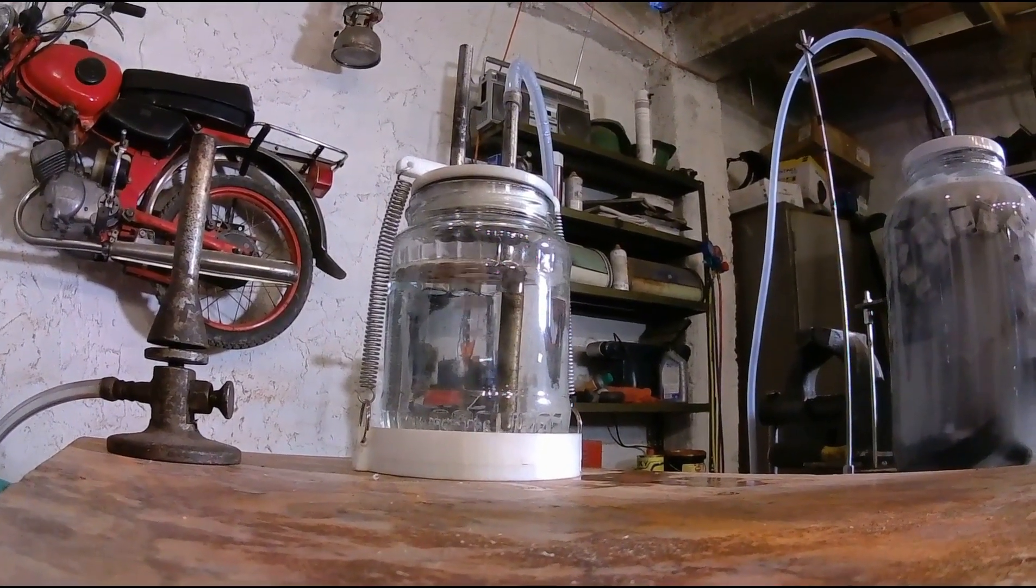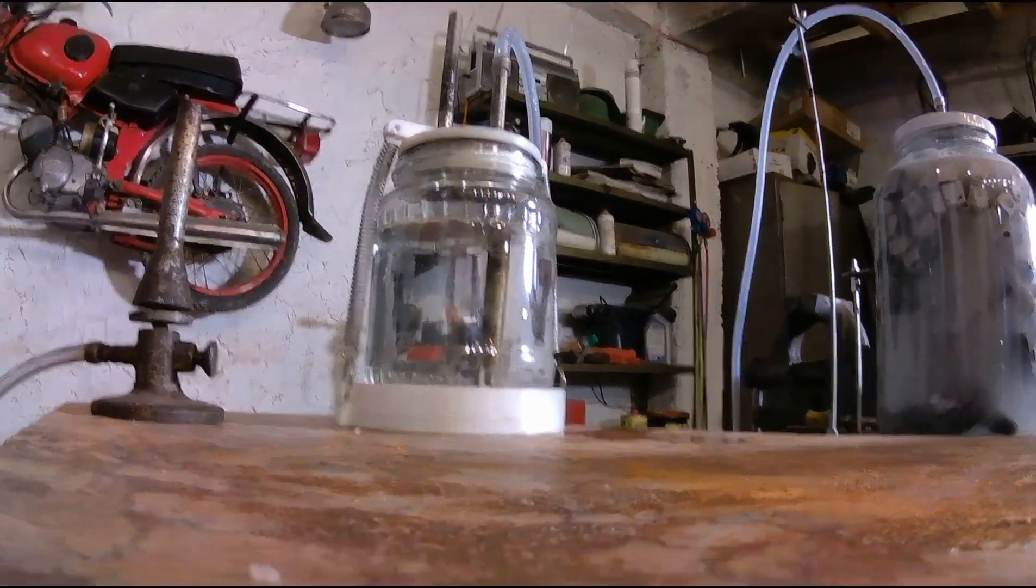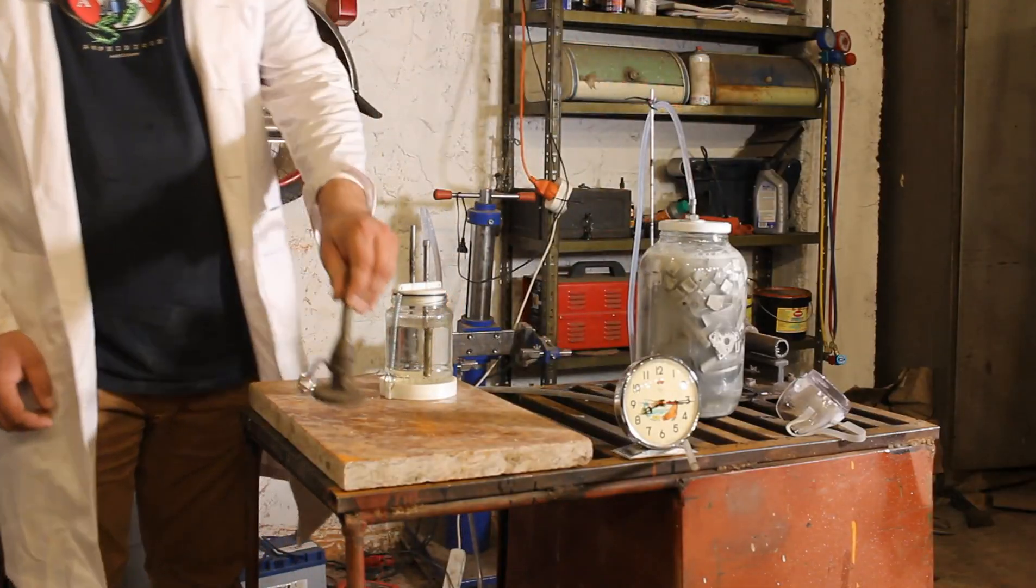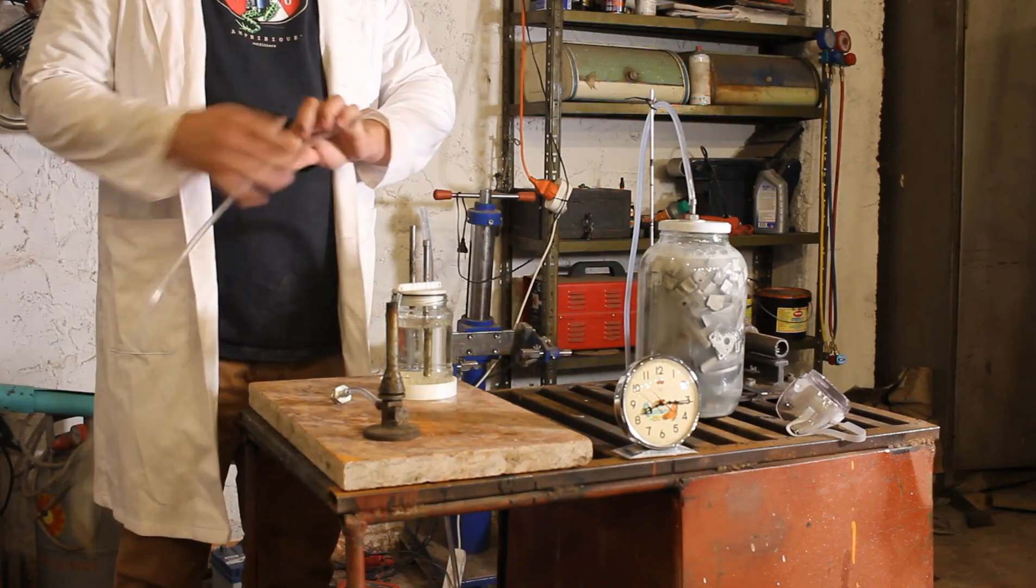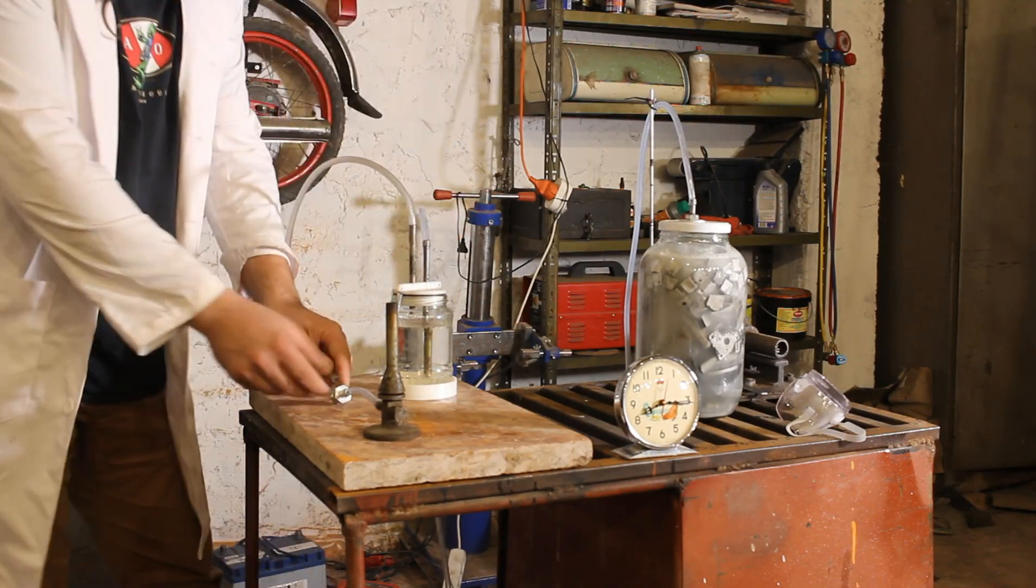This is a close-up view of the bubbler. As you may see hydrogen bubbles are clearly forming. Now it's time to connect the Bunsen burner and the one-way valve. With these pieces in place our setup should be complete.